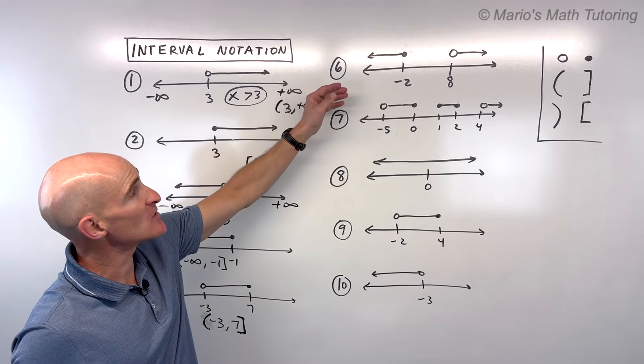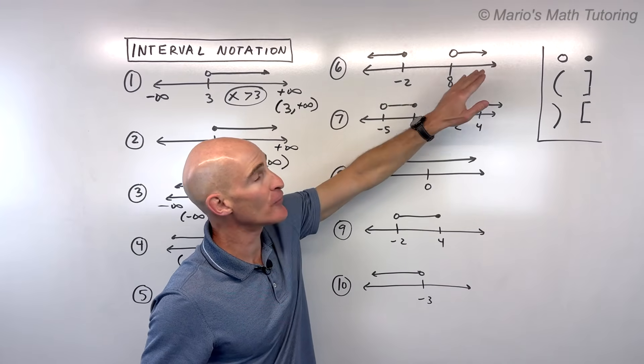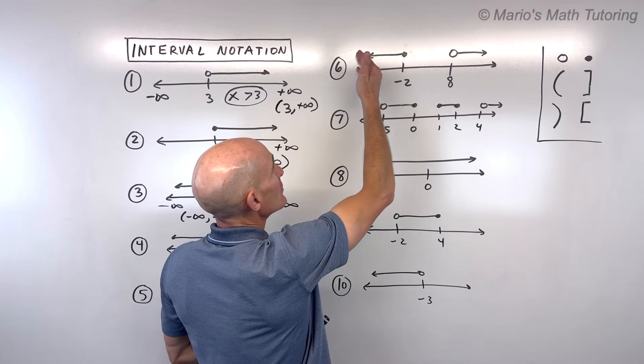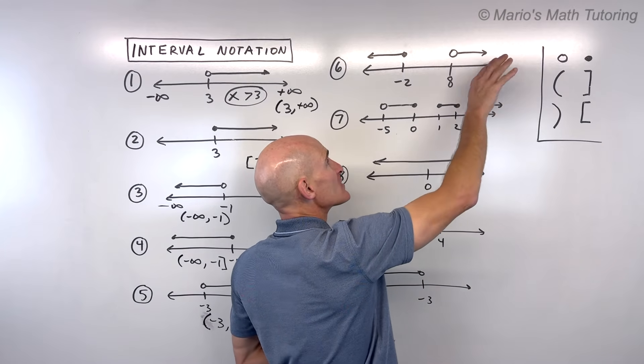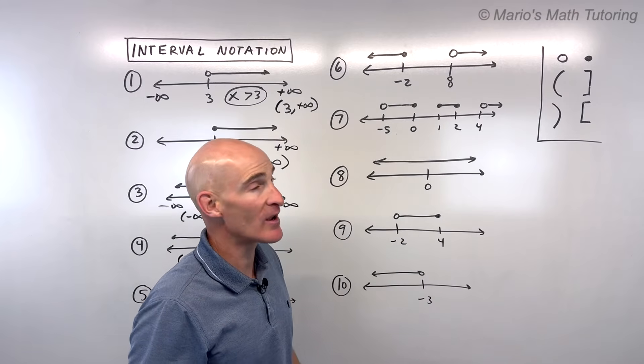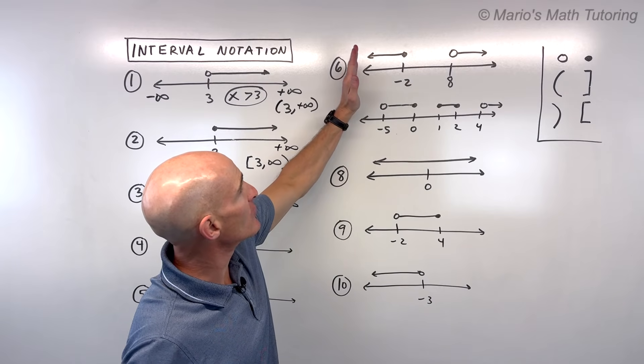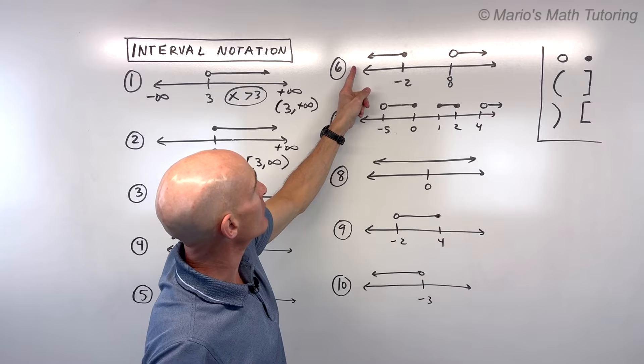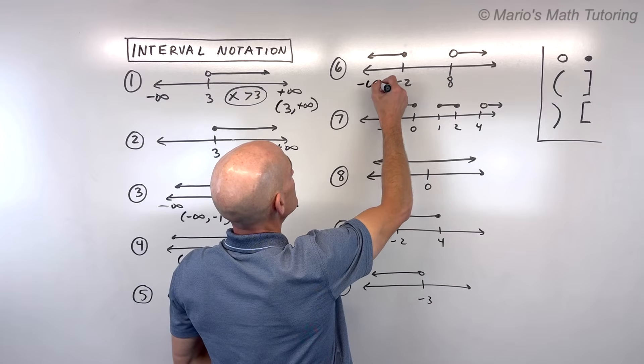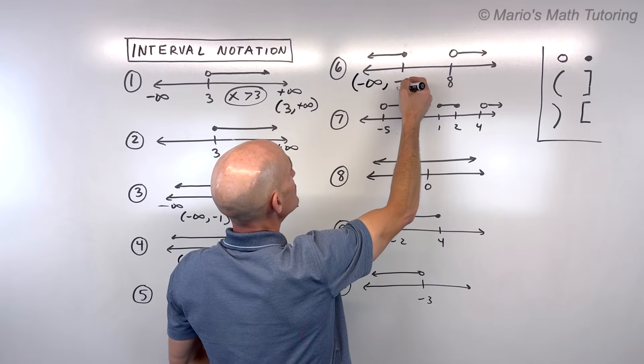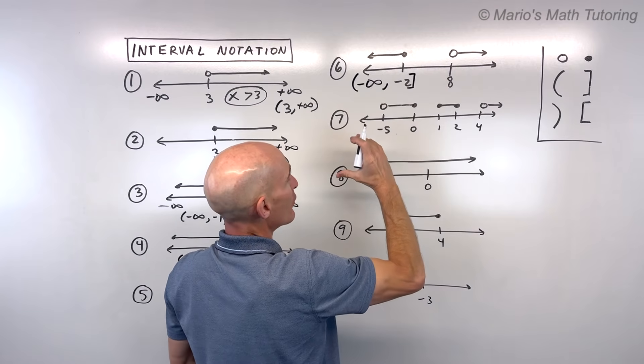For number 6, this one's interesting because you have two different intervals here. You have these set of points that are less than or equal to negative 2, and these points that are greater than 8. So how do we write that one? Again, working from left to right, I'm going from negative infinity, parenthesis, to negative 2, includes negative 2, bracket.